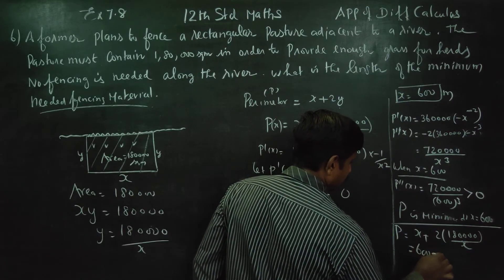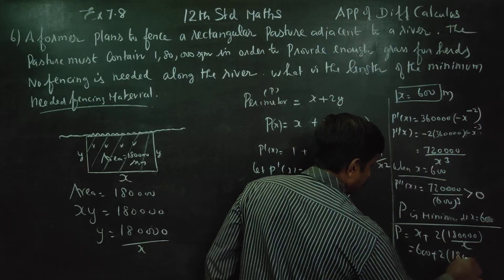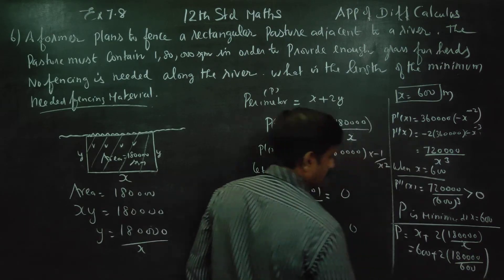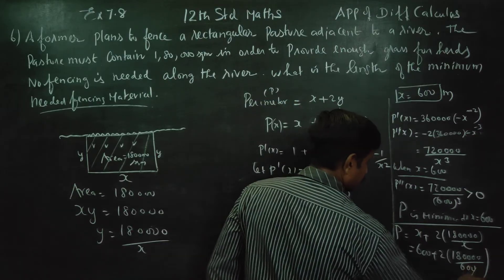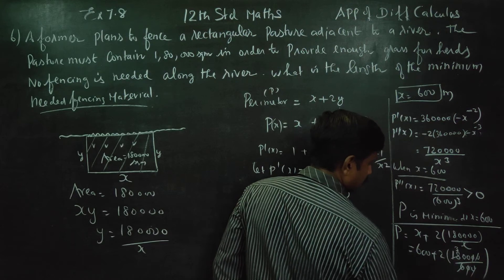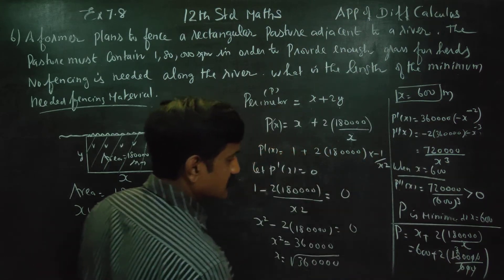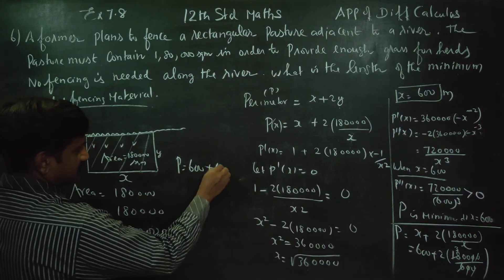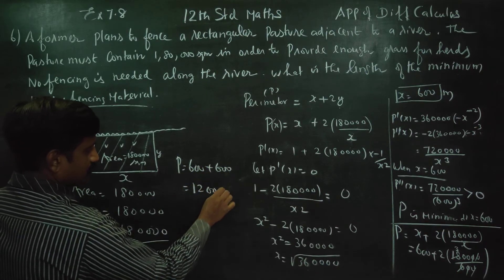Substituting x equals 600: P equals 600 plus 2 into 1,80,000 by 600. Cancelling, 1,80,000 by 600 gives 300, so 2 into 300 is 600. Therefore P equals 600 plus 600 equals 1200 meters.